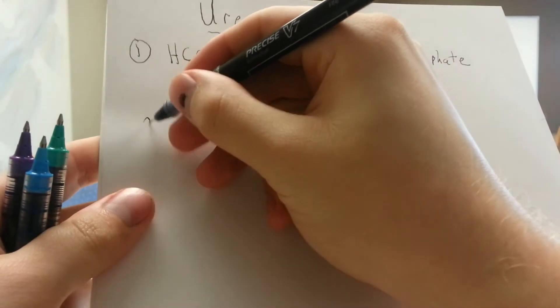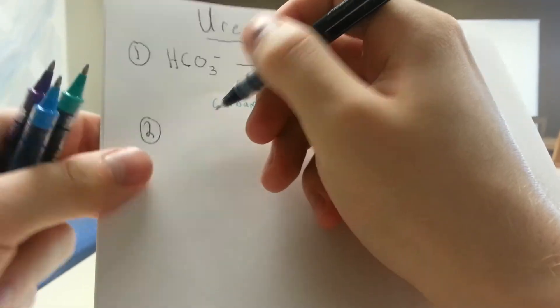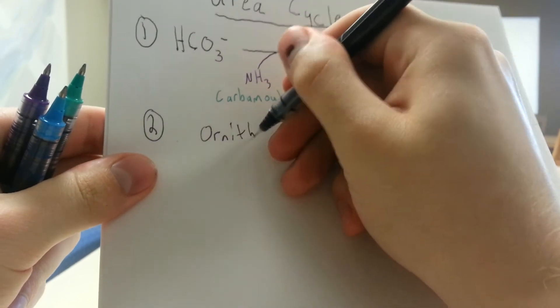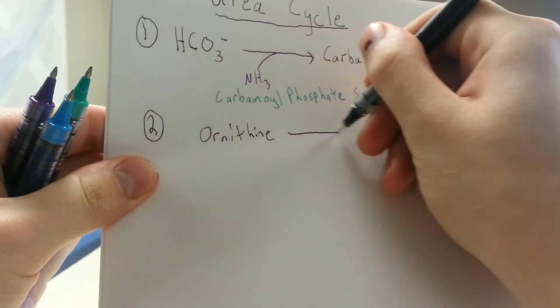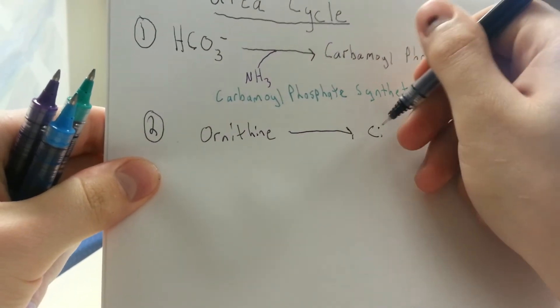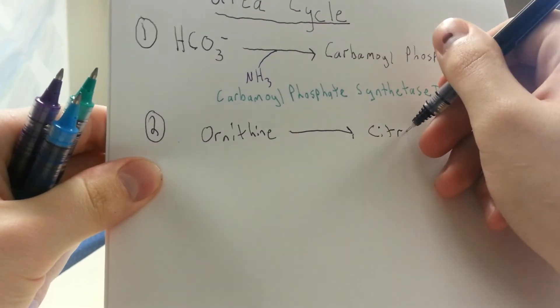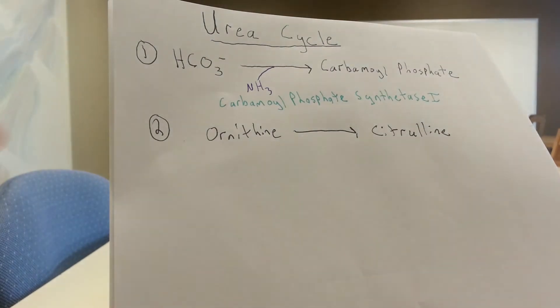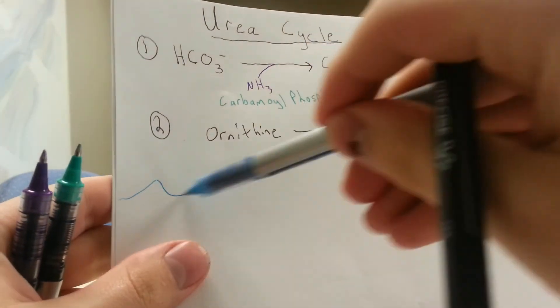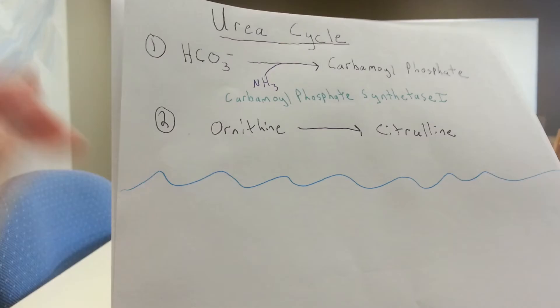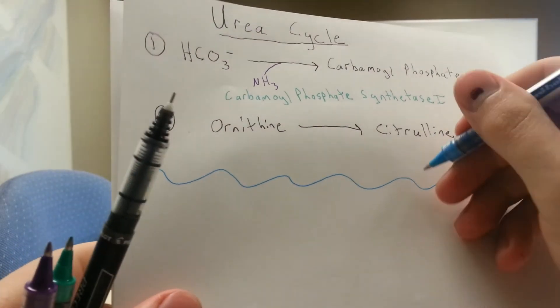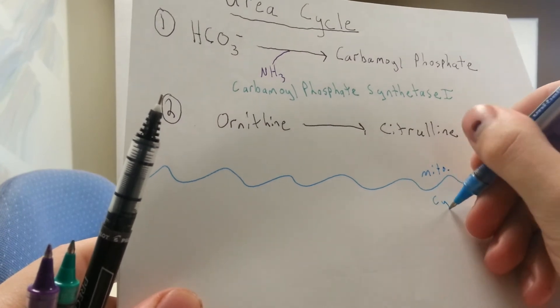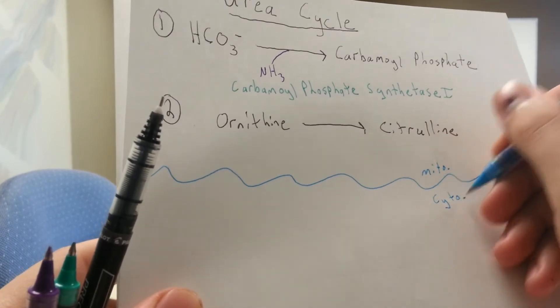The first cyclic part of it is actually ornithine going to citrulline. And another important thing to know about the cycle is where this is taking place inside the cell. So these two steps are taking place within the mitochondrial matrix. So this blue line here is going to be our mitochondrial membrane, and so I'll just label this mitochondria, and this will just be the cytosol.